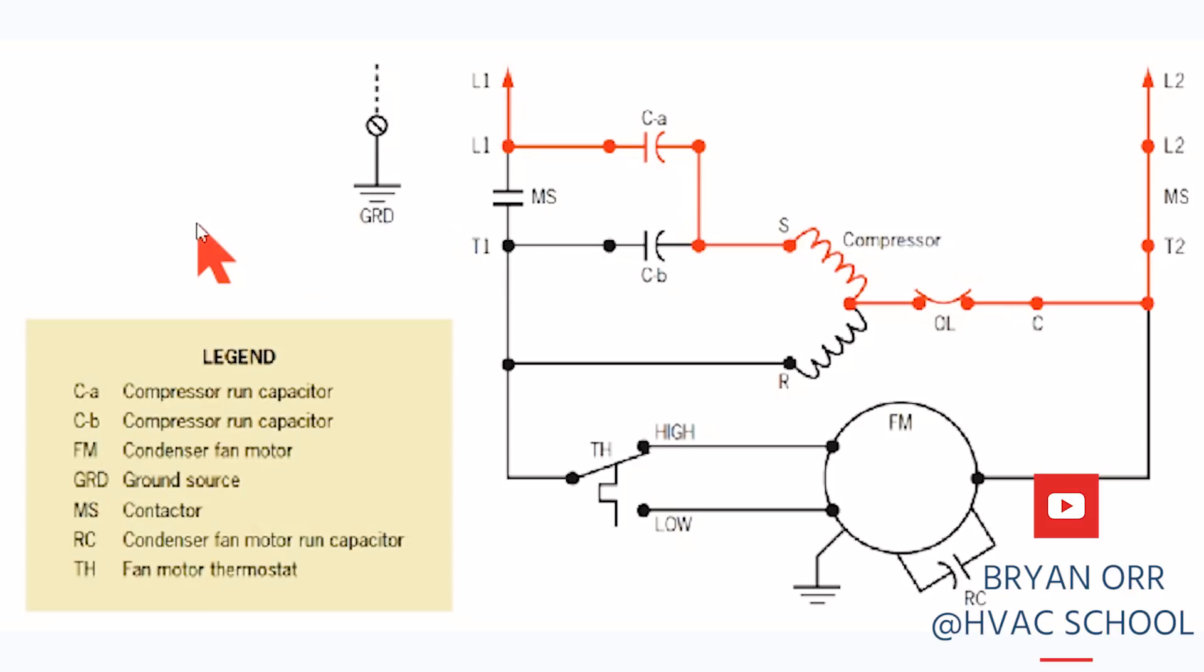This is an interesting case study - this type of crankcase heater configuration uses the compressor start winding as a heater to keep the compressor warm even on the off cycle, which can help prevent liquid refrigerant from migrating into the crankcase. That's the reason for a crankcase heater - to prevent liquid refrigerant from migrating to the crankcase.